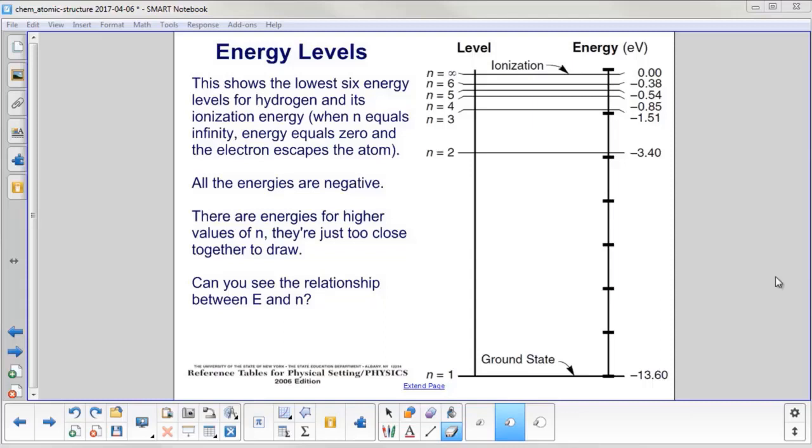The six lowest energy levels for hydrogen are shown here, and its ionization energy up at the top. The ionization energy is where n equals infinity. There's no potential energy left here, and the electron escapes the atom.